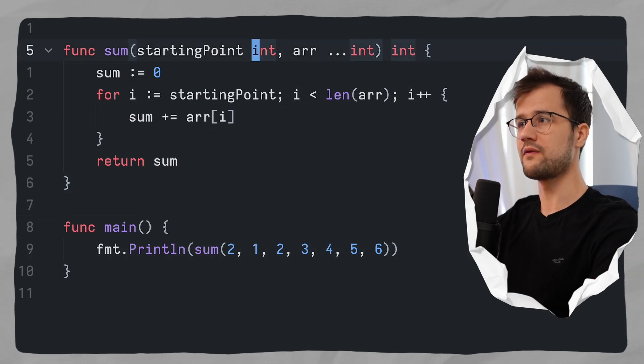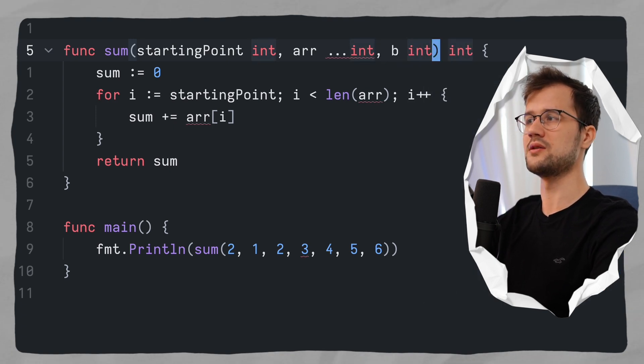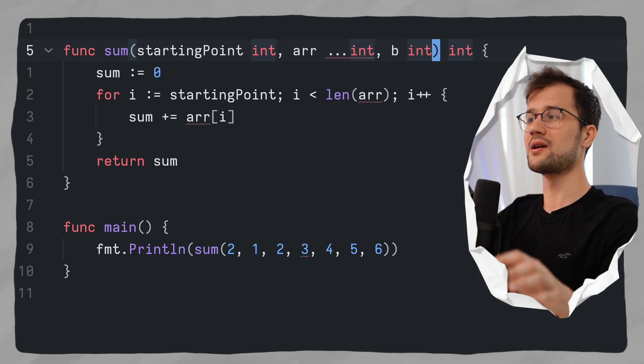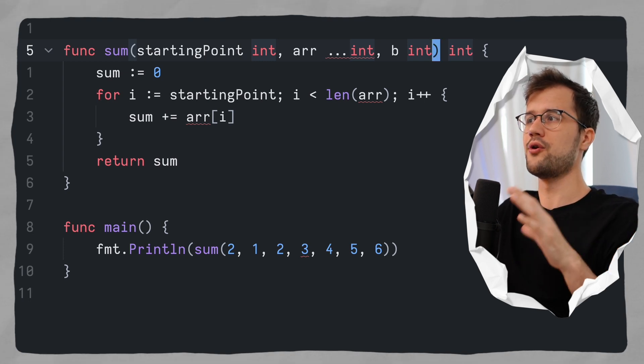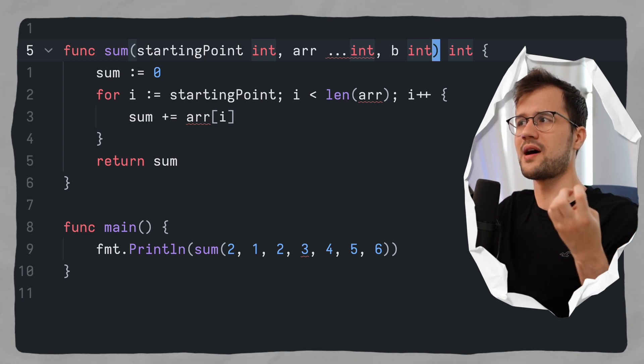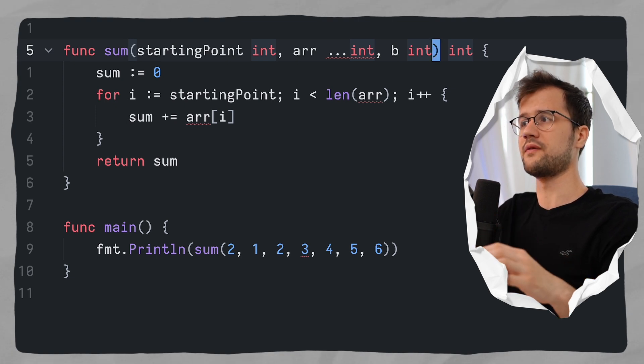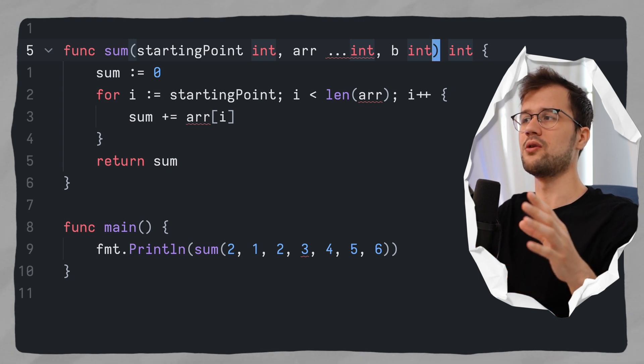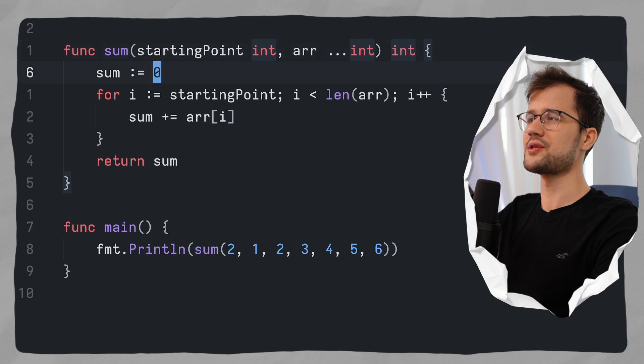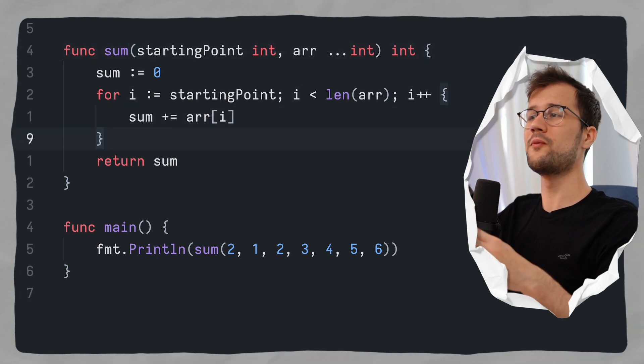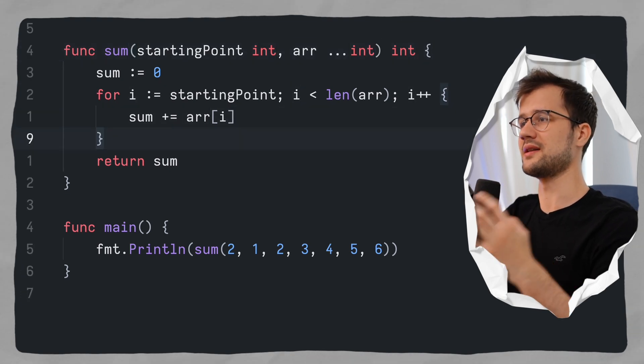But what we cannot do in a variadic function is to define arguments after the variadic function parameter. So we cannot say for instance b integer. This does not work because obviously it's pretty clear that Golang does not know when this argument is going to occur. Because this variadic function parameter can be of length n basically. So let's just remove this here and now hopefully variadic functions are clear for you.